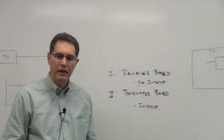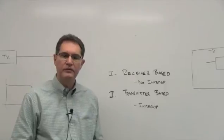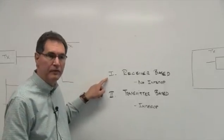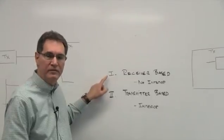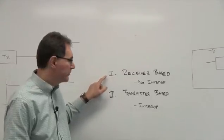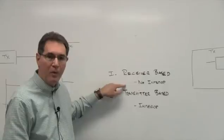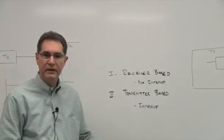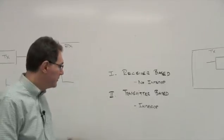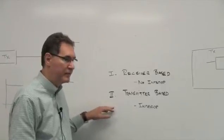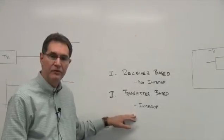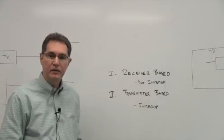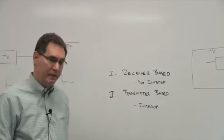EMI mitigation algorithms essentially fall into two categories. The first one is receiver-based. In other words, the algorithm is wholly contained within the receiver, and as a result, no interoperability is needed between the receiver and its link partner. The other type is transmitter-based, and as a result, interoperation is required between the receiver and the transmitter. Let's take a look at both of those types in detail.